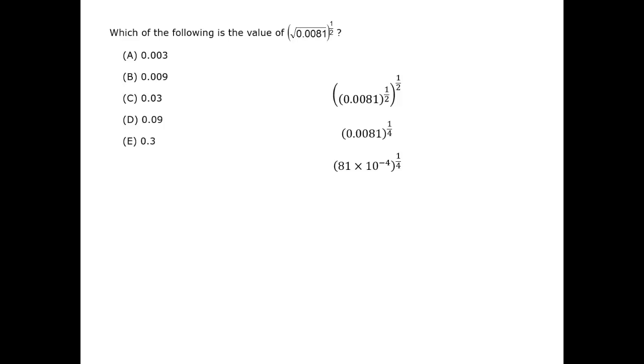Since the two terms inside the parentheses are multiplied, we can distribute the exponent. That gives us 81 to the one-quarter power times 10 to the minus-fourth power to the one-quarter power.